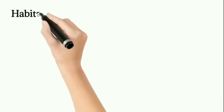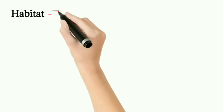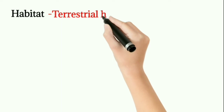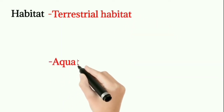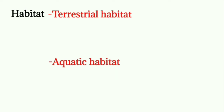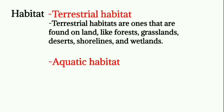We classified the habitat into two types based on where the animals live. Some animals live in water, some on land. According to this, habitat is classified into two types: terrestrial habitat and aquatic habitat. Terrestrial habitat is found on land; aquatic habitat is found in water. Examples for terrestrial habitat: forests, grasslands, deserts, wetlands, etc. Examples for aquatic habitat: oceans, lakes, ponds.